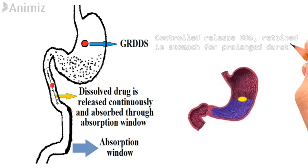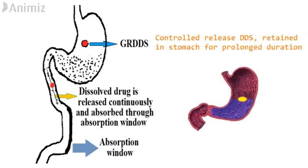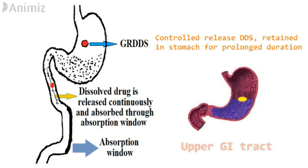These systems are controlled-release drug delivery systems which are retained in the stomach for a prolonged duration. The dissolved drug is released and absorbed through the absorption window, which is usually the upper GI tract.